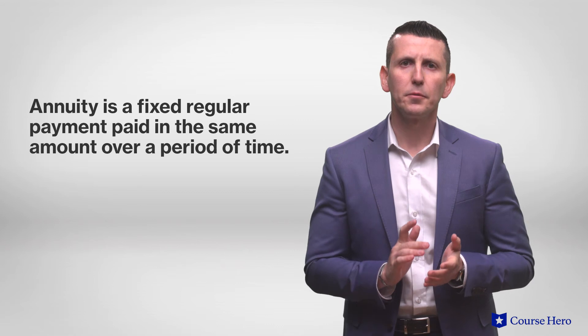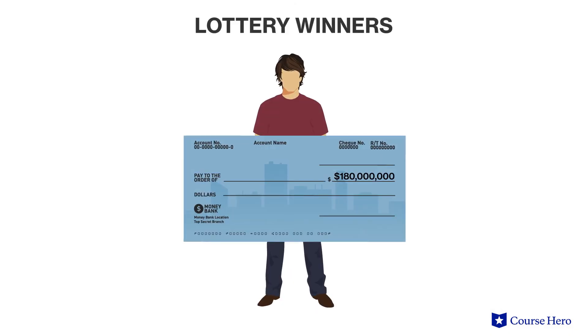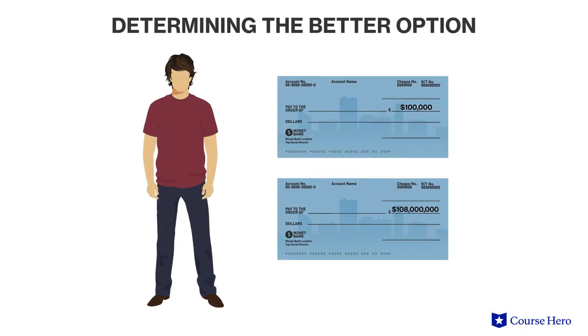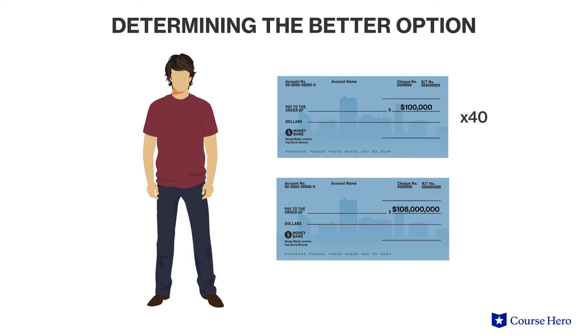An annuity is a fixed regular payment paid in the same amount over a period of time. Annuities, like lump sum payments, can be measured at present value or at future value. Lottery winners are frequently given the choice of a single lump sum payment option or an annuity option. Personal characteristics affect this decision, but so does the time value of money. Suppose that Tom wins the lottery and is offered 40 annual payments of $100,000 or a lump sum of $1,800,000 payable immediately. Using the time value of money formula, Tom can determine the present value of the annuity to see whether the annuity or the immediate lump sum payment is worth more.